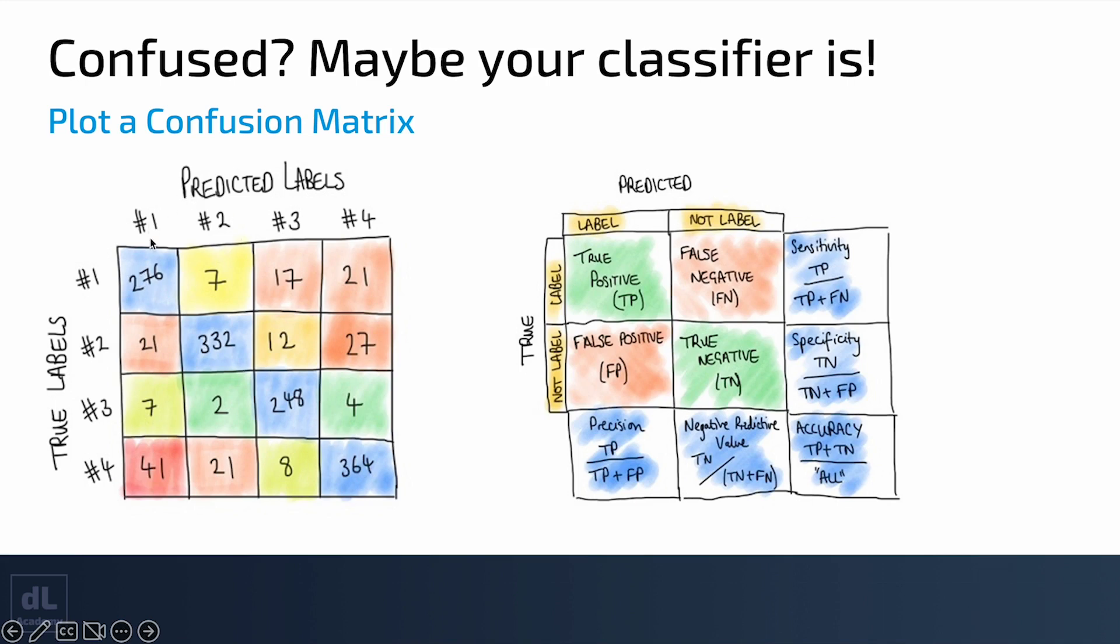What we really want is all of the values to line up along this diagonal. This means when we've predicted class 1, it's been correct. The true label is class 1, class 2 class 2, class 3 class 3, and class 4 class 4. The number of correct results in your test set are found by adding up the whole of the diagonal.